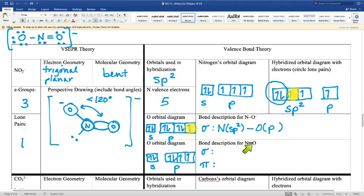This one is a double bond. There have to be two bonds, a sigma bond and a pi bond. Pi bonds are always between just the p orbitals.